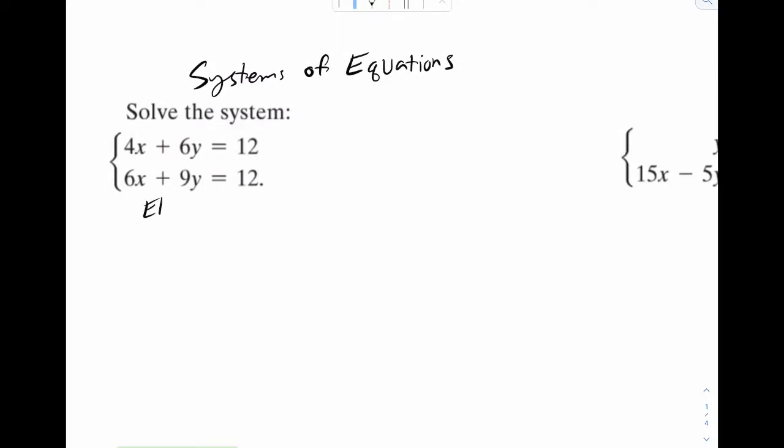So I'll multiply this top equation by negative 3, the bottom one by positive 2. Let's take a look at what happens. I get negative 12x minus 18y, that's equal to negative 36. And then on the bottom one, I get positive 12x plus 18y, that's equal to 24.